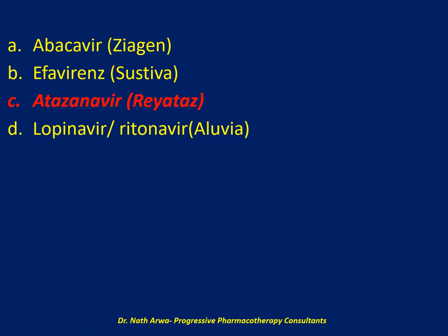Atazanavir is a protease inhibitor used for HIV treatment that is known to cause isolated elevation in bilirubin because of its ability to inhibit glucuronidation of bilirubin via the UGT1A1 enzyme system. Efavirenz is an NNRTI used in HIV treatment associated with the risk of worsening psychiatric conditions. Lopinavir/ritonavir (Aluvia) is a PI that causes dyslipidemia and hyperglycemia but not usually isolated elevations of bilirubin.